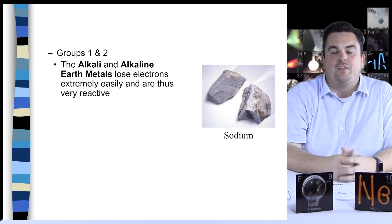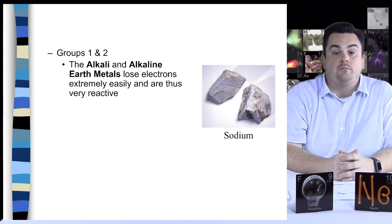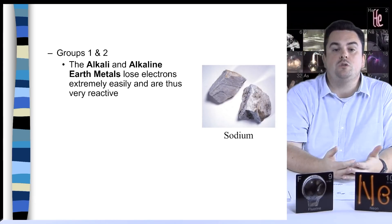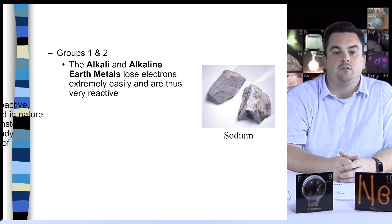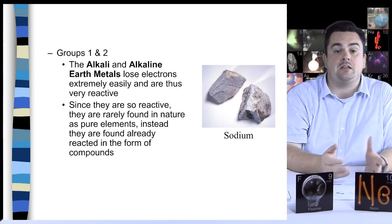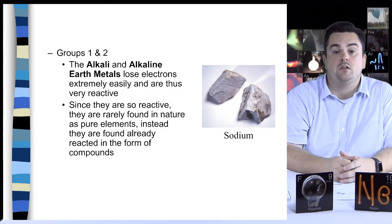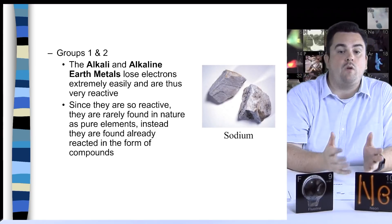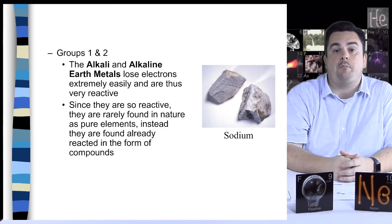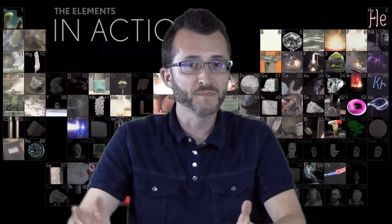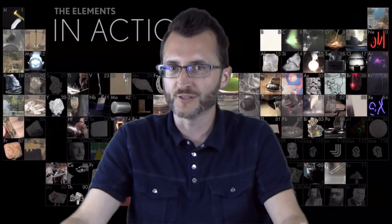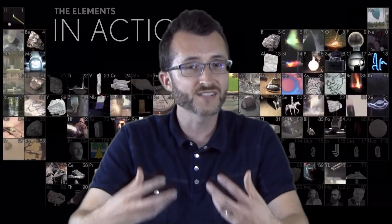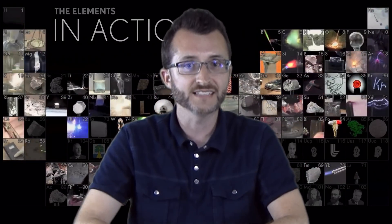Groups one and two. The alkali metals, which are group one, and the alkaline earth metals, group two, lose electrons extremely easily and are thus very reactive. Since they are so reactive, they are rarely found in nature as pure elements. Instead, they are found already reacted in the form of compounds. Let's say you were mining for sodium. You're not going to find any. There's no sodium that you can find in a mine. You can find lots of sodium chloride because the sodium has already reacted with chlorine to form NaCl.